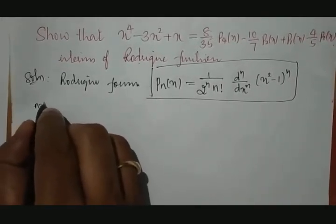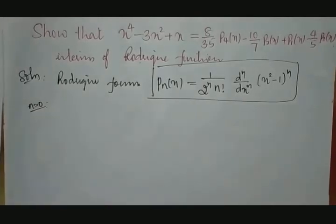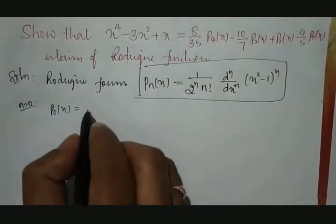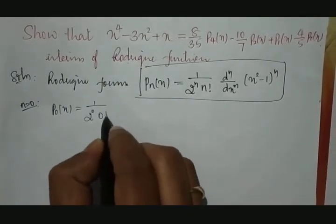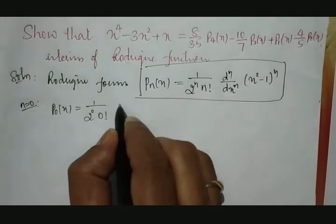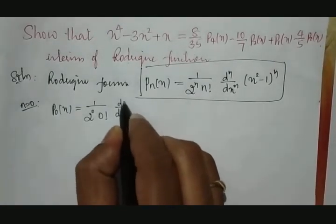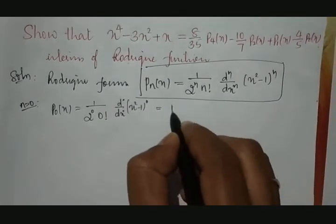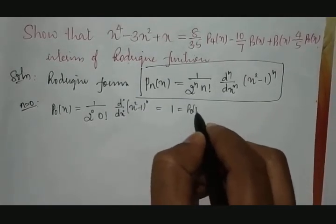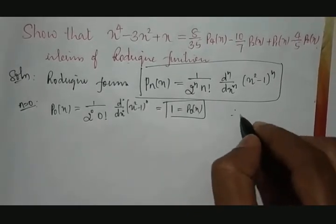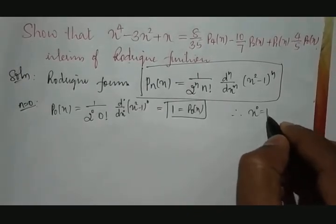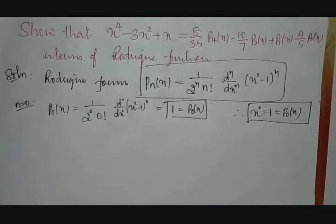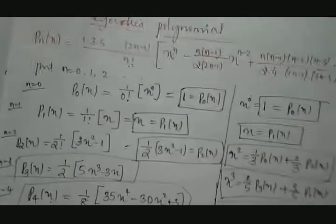If we substitute n = 0, then P₀(x) equals 1 divided by 2⁰ into 0 factorial, times the zeroth derivative of (x² - 1)⁰. Since the zeroth derivative of 1 is just 1, we get P₀(x) = 1. Therefore x⁰ = 1 = P₀(x), which is the same as the Legendre polynomial.